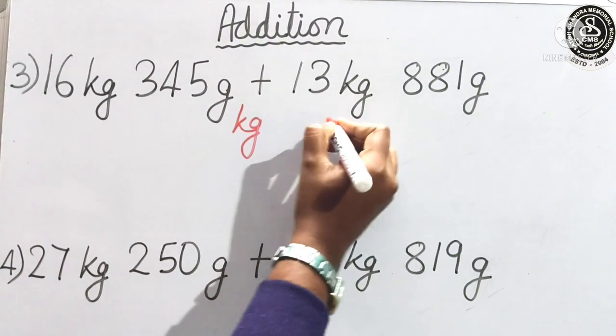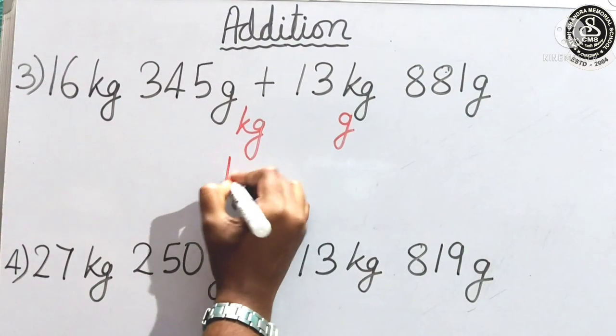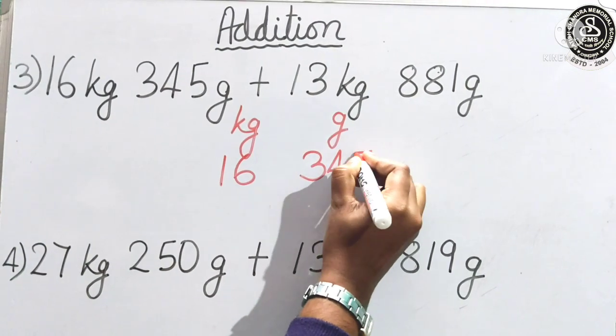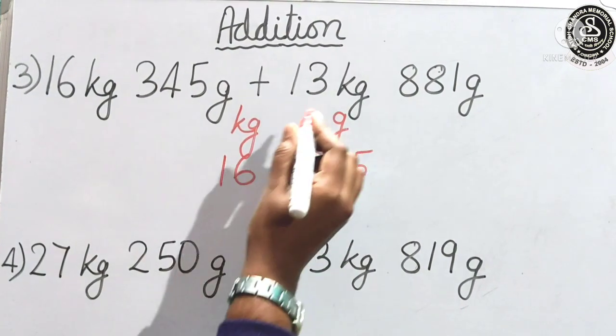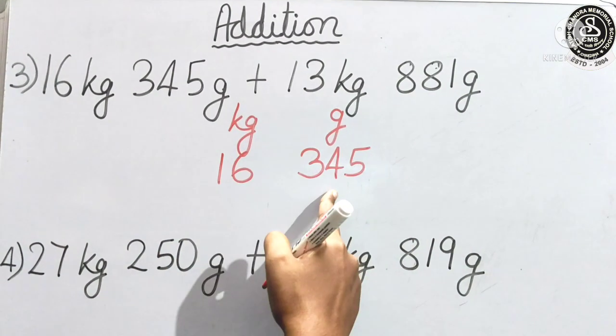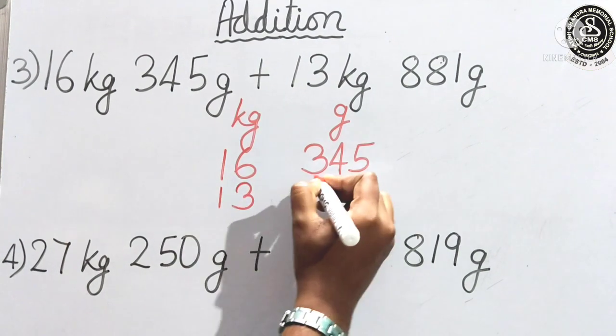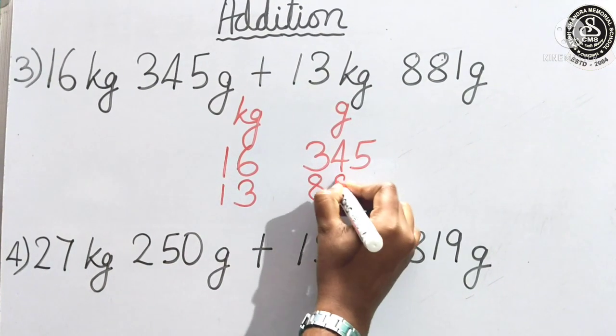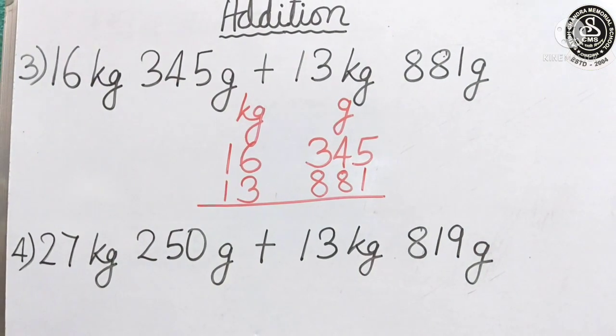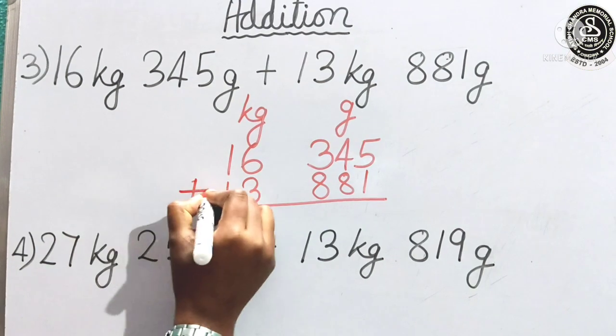That is kilogram, gram. Now, let us write the number. This side 16 and this side 345 and then kilogram we will write here and gram we will write below the gram unit. That is 13 and 881. Now, we will find the answer.